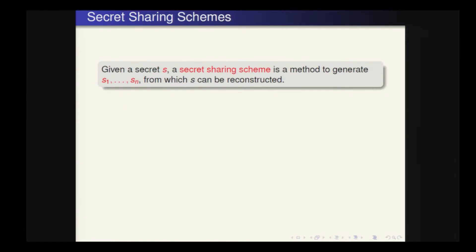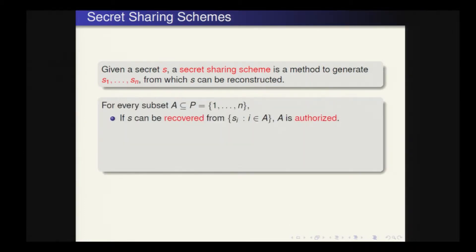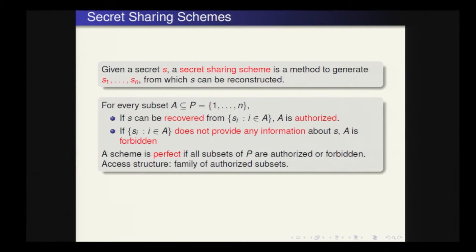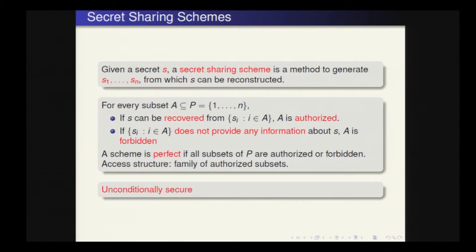A secret sharing scheme is a method to protect a secret. Given a secret, the scheme generates pieces of information called shares from which the secret can be recovered. For every subset A, if the secret can be recovered from the shares with indices in A, we say A is authorized. If the shares provide no information about the secret, we say A is forbidden. A scheme is perfect if all subsets are either forbidden or authorized, and the access structure is the family of authorized subsets. All schemes in this work are unconditionally secure, so security does not rely on any computational assumption.